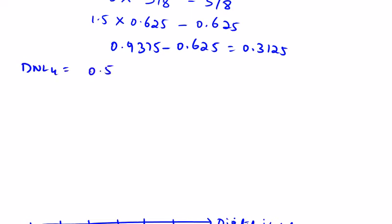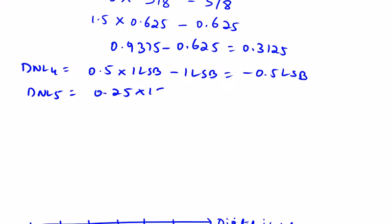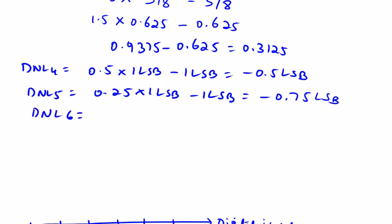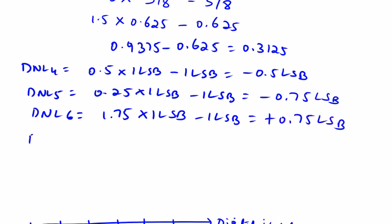DNL(4): the step height is reduced to 0.5 times 1 LSB minus 1 LSB, giving minus 0.5 LSB. DNL(5): the step height is 0.25 times 1 LSB, so DNL(5) is minus 0.75 LSB. DNL(6) equals 1.75 times 1 LSB minus 1 LSB, giving plus 0.75 LSB.